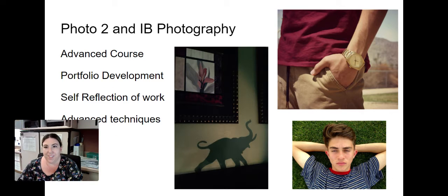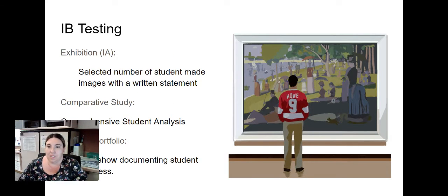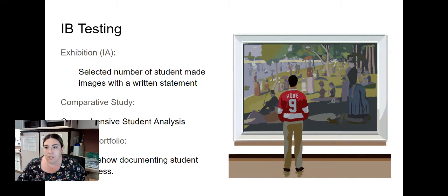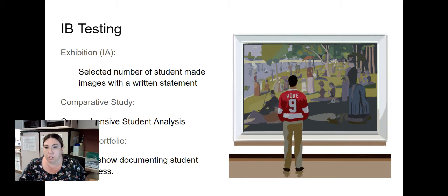IB photography also does the same thing, but they have specific components that you have to fulfill for the test. Each student does a portion of this. If they're full diploma testing, they have to complete all of these requirements: that would be your exhibition IA, the comparative study, and the process portfolio. The exhibition is the stuff I grade in class and it's always an ongoing process. The comparative study is basically an essay that you turn in to IB, and the process portfolio is a journal saying what you did in the class and what you got out of it — that's what you upload to IB as well.